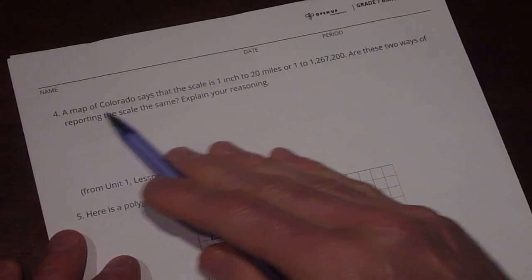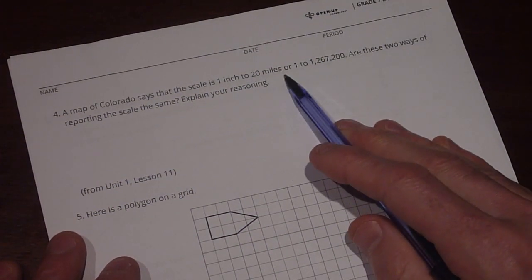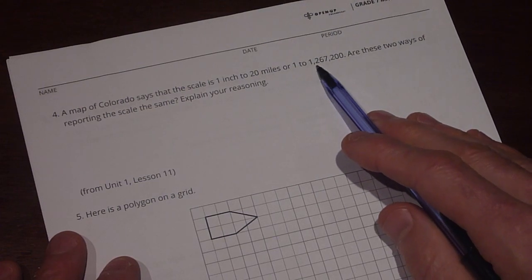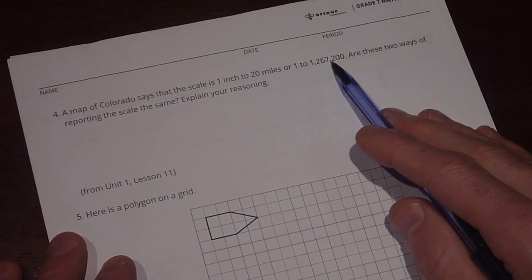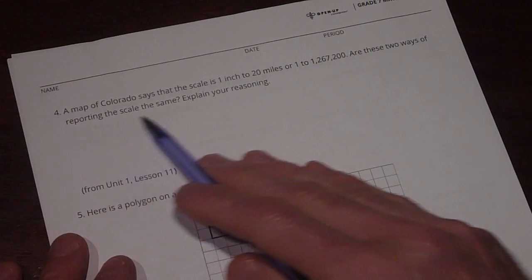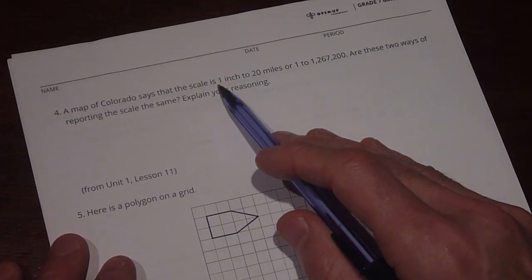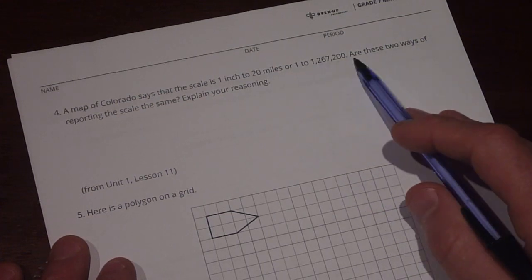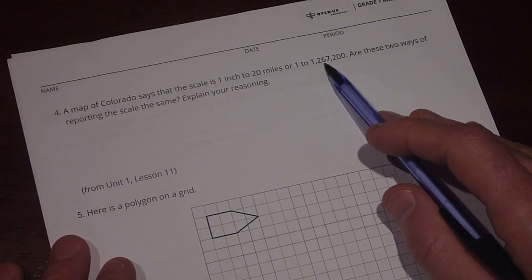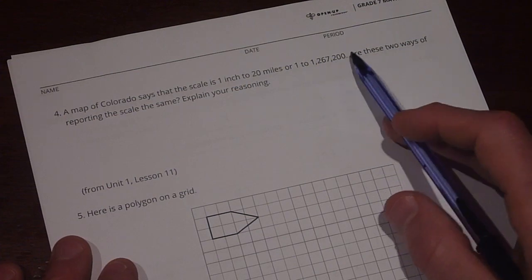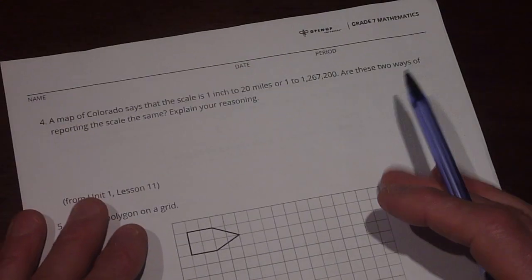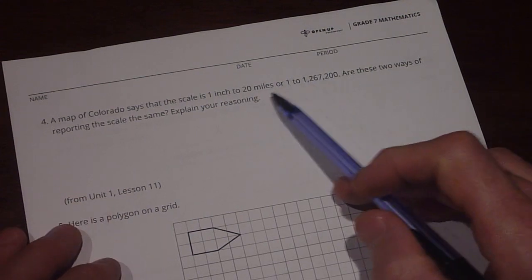Let's move on to number 4. A map of Colorado says the scale is 1 inch to 20 miles or 1 to 1,267,200. Are these two ways of reporting the scale the same? Explain your reasoning. So first we need to think about whether or not this makes sense. So 1 inch to 20 miles or 1 to this large number, 1,267,200. Well, there aren't any units there in this second one, so we need to figure this out.